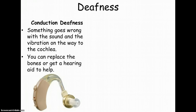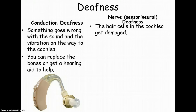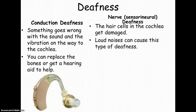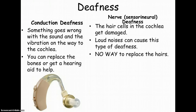Then there's something called nerve, or sensorineural, deafness, and this is where the hair cells in the cochlea get damaged. This is a little more serious — loud noises can cause this type of deafness, and you can't actually ever replace the hairs. So the one solution, or the way around that, would be cochlear implants, which we talked about in class today.